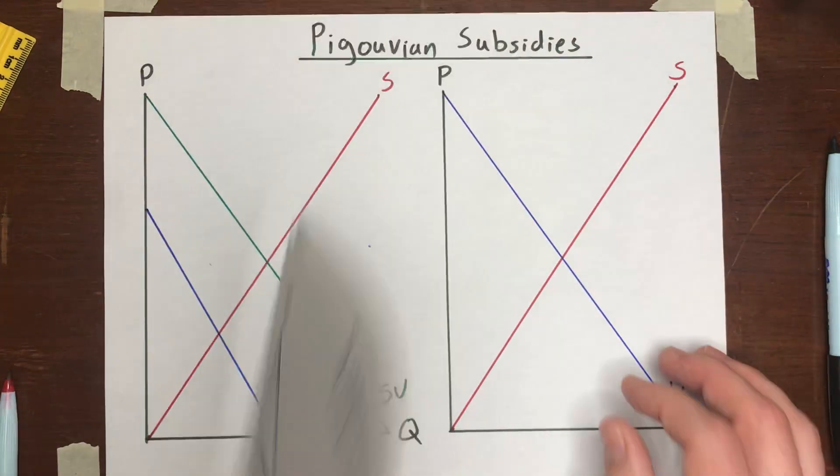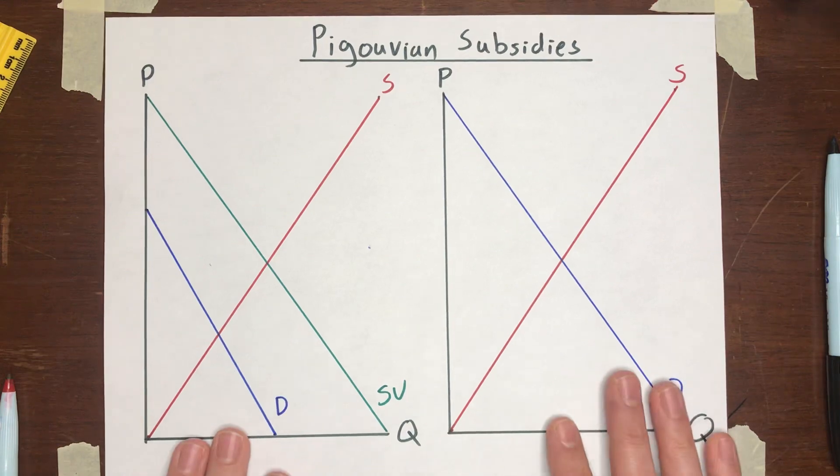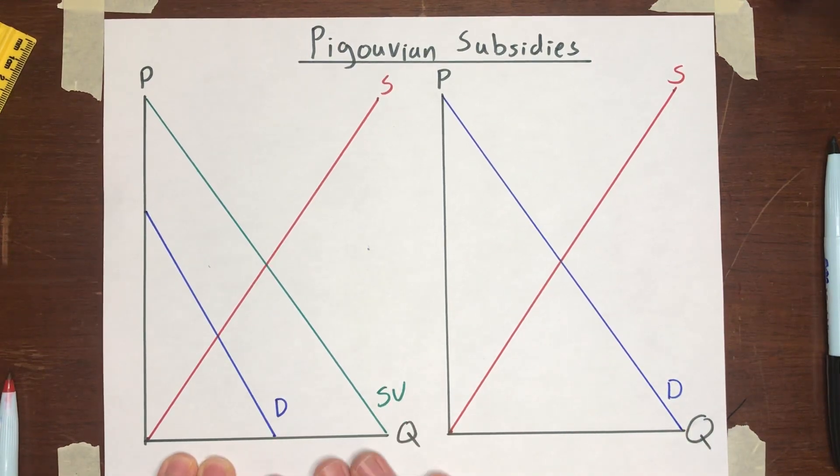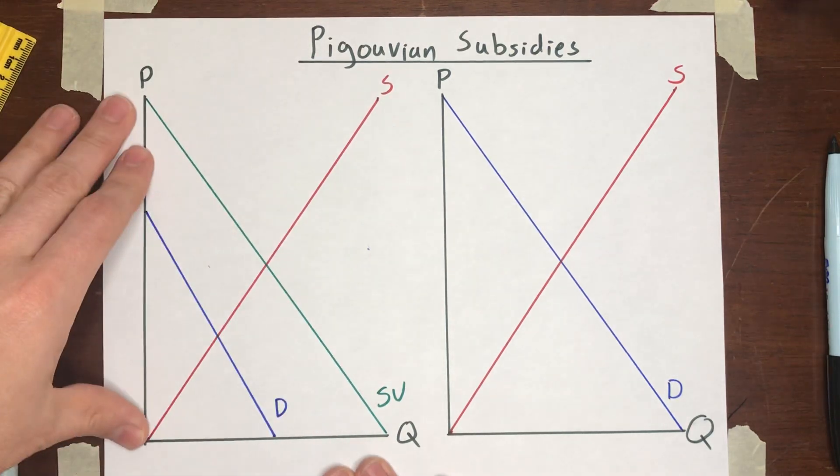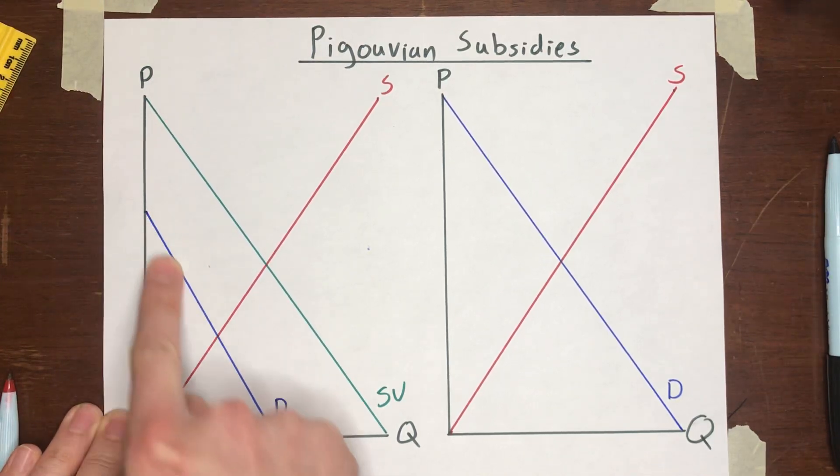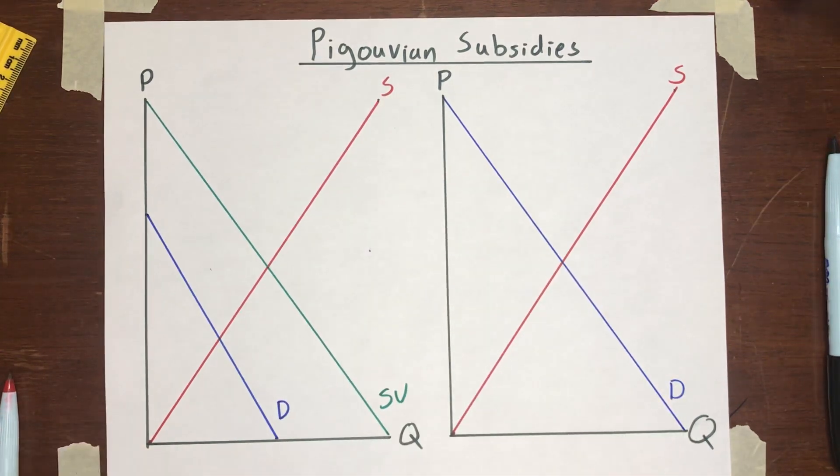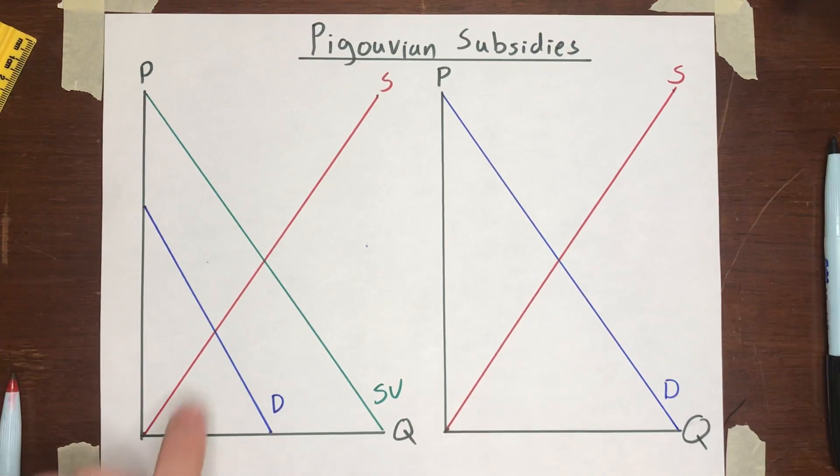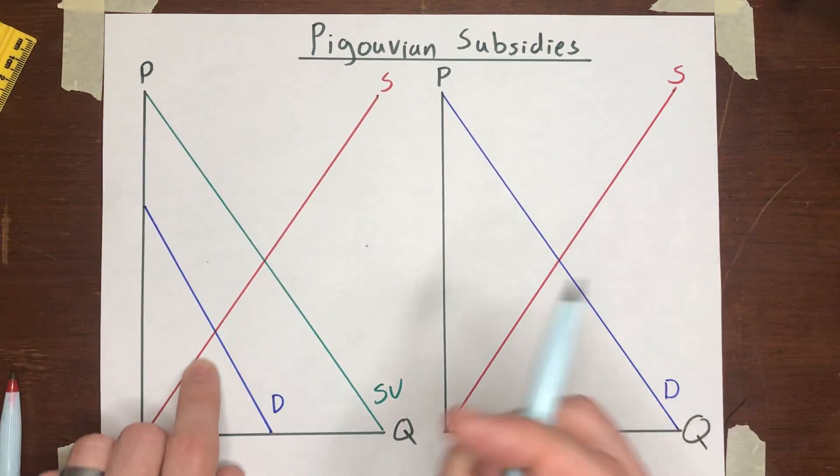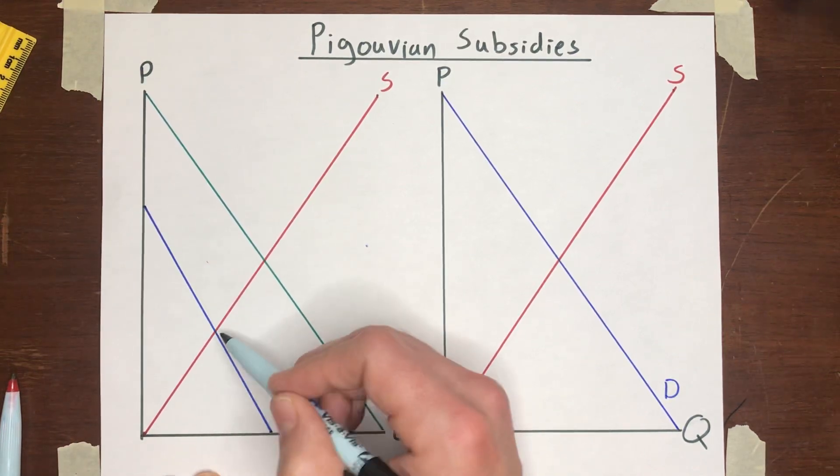So that moves us on to Pigouvian subsidies, which is going to be very similar to a Pigouvian tax. But now you do it in a circumstance where you have a positive externality. So over here on the left, we've got our market before there's been any subsidy. This demand curve shows the value that consumers are getting out of purchasing units of the good. This red supply curve shows the private cost. And this is where we expect the market to end up because once the buyers and sellers reach that point, there's no more gains from trade that they can capture themselves.